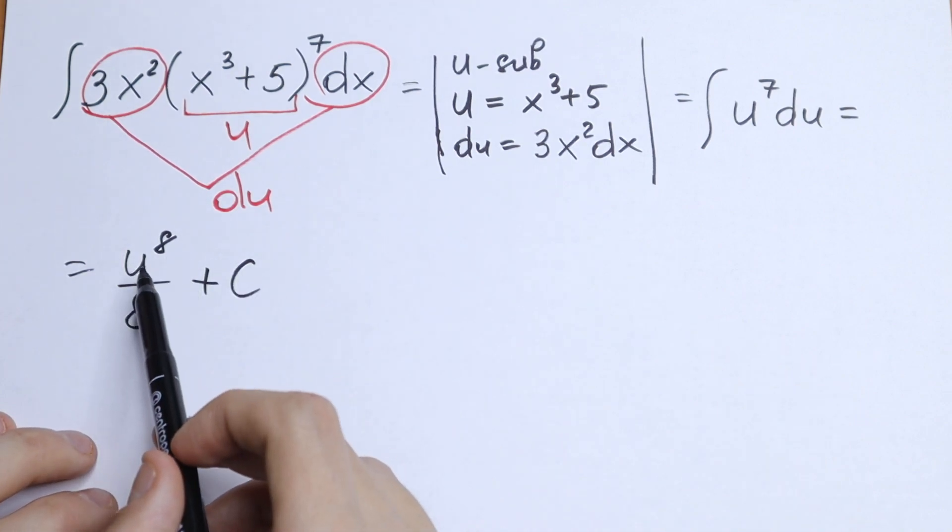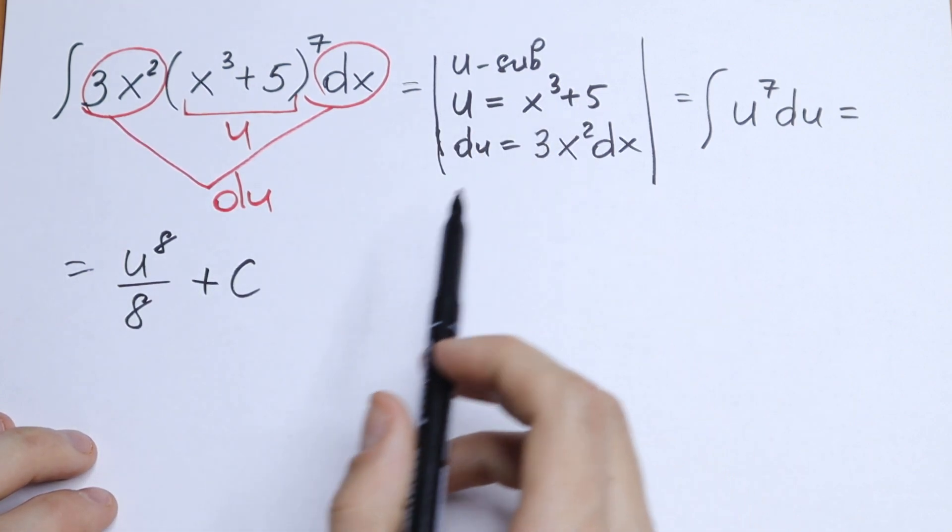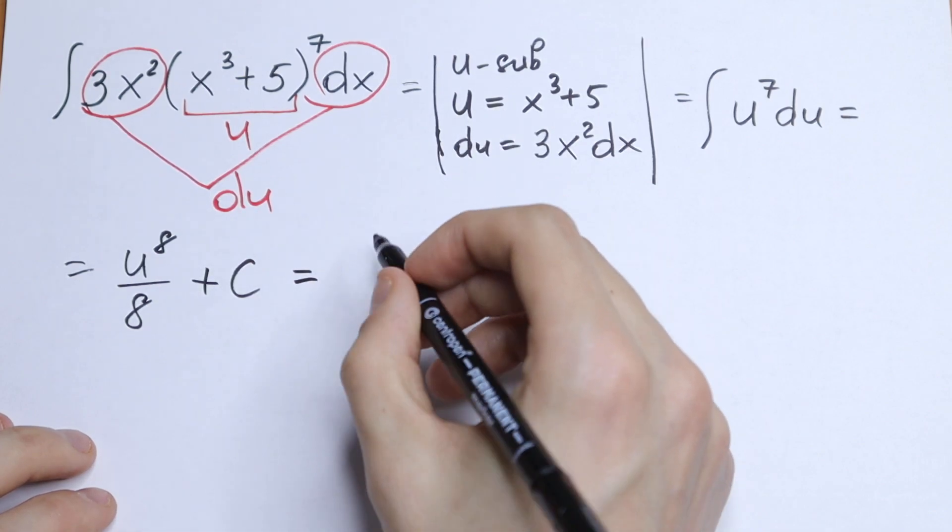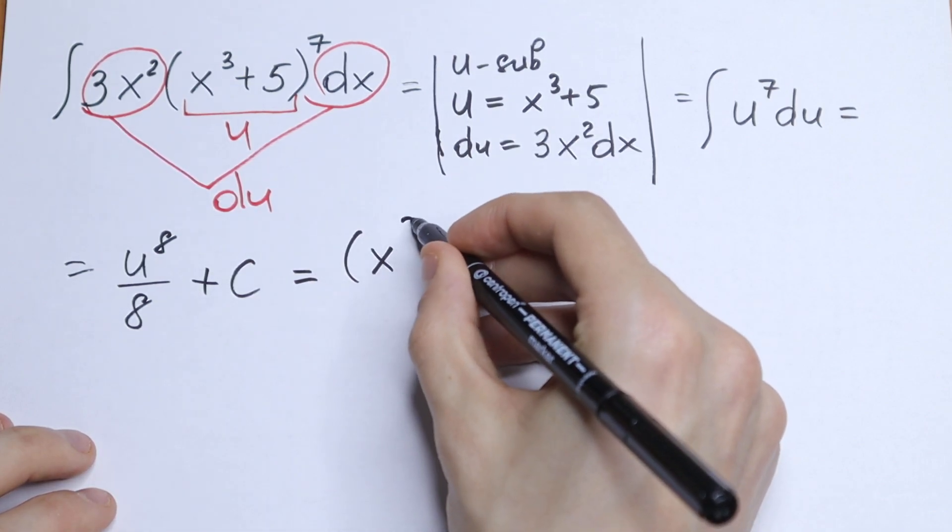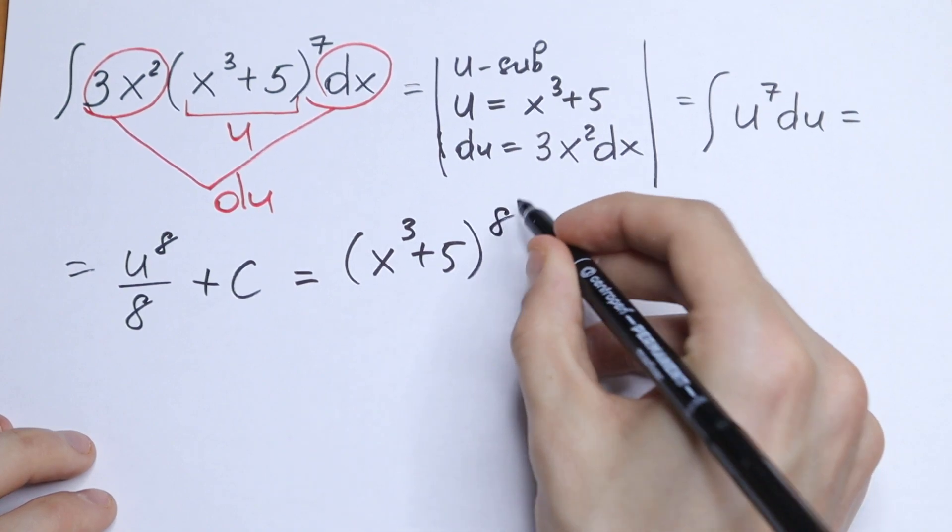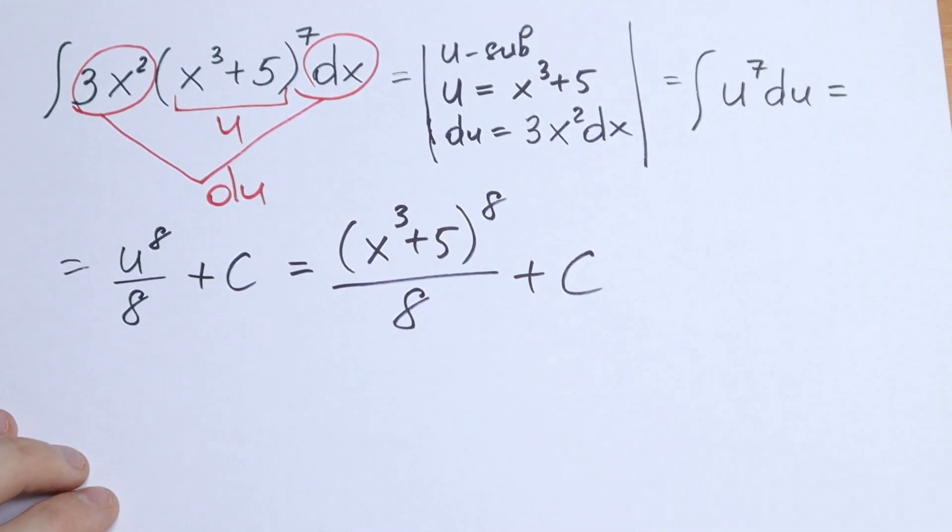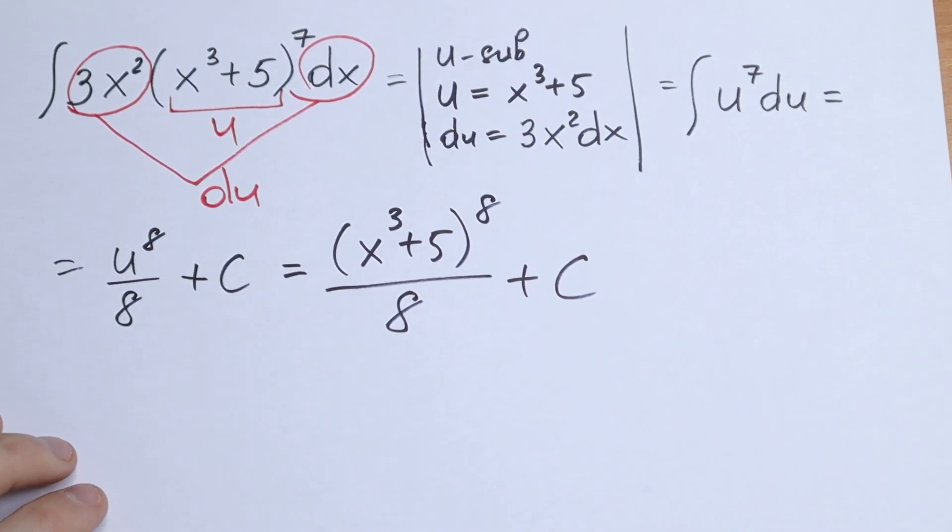And let's go to our substitution u equals x cubed plus 5. Let's plug in this x cubed plus 5 right here. So we will have x cubed plus 5 to the 8th power over 8 plus C. And this is our answer.